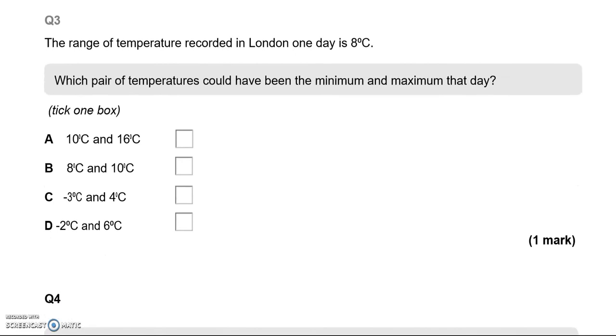The third question is saying, the range of temperature recorded in London one day is 8 degrees Celsius. Which pair of temperatures could have been the minimum and maximum that day? So we've got 10 degrees and 16 degrees Celsius. The difference between them is actually 6. 16 take away 10 gives us 6. So that's not what we're after.